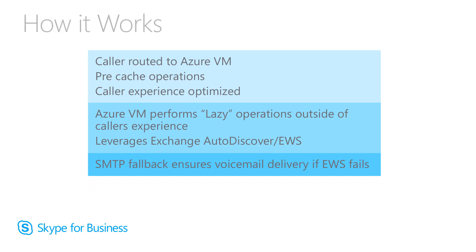There is an SMTP fallback process to ensure that if EWS fails, an SMTP message is sent to the user's inbox. There are always scenarios where EWS may be temporarily inaccessible, and we don't want voicemails to be lost, so there is a failover process. The next slide will go into more detail about how this works.